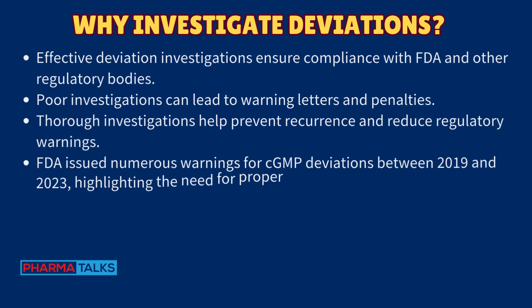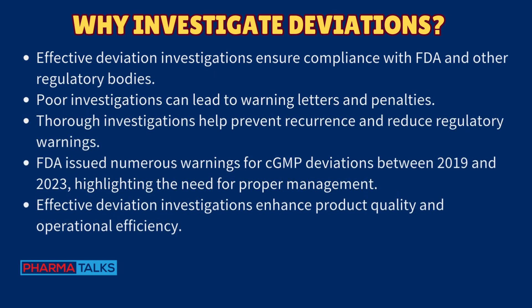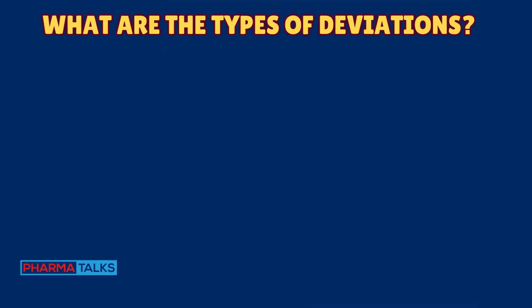Managing deviations involves real-time recording and thorough investigation using root cause analysis. Effective deviation investigations ensure compliance with FDA and other regulatory bodies. Poor investigations can lead to warning letters and penalties. Thorough investigations help prevent recurrence and reduce regulatory warnings. The FDA issued numerous warnings for cGMP deviations between 2019 and 2023, highlighting the need for proper management.